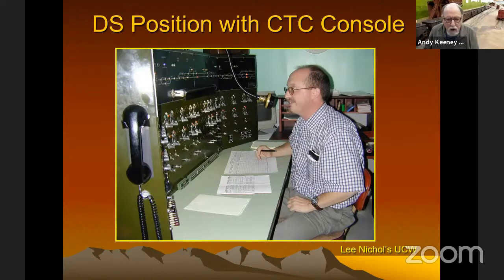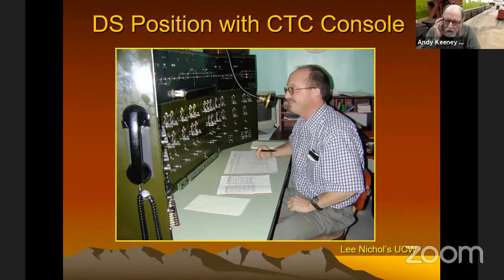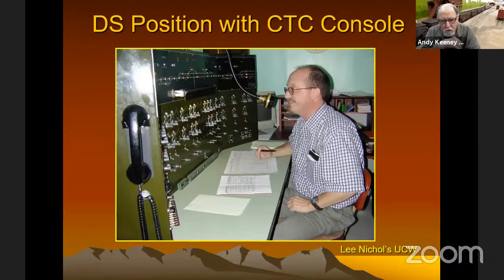Here's a gentleman using Lee's CTC panel during an op session. You can see he's still got the form there to keep track of trains across the railroad. Dark territory is where you're operating with no signals — strictly on timetable train orders. Dark territory could also have ABS signals — automatic block signals. ABS just lets you know the track ahead of you is clear, but it's not a clearance like CTC. It doesn't mean you're cleared to go down that track unless you've got orders telling you you're clear. But if the signal is red, you don't want to proceed — there's probably something coming at you.